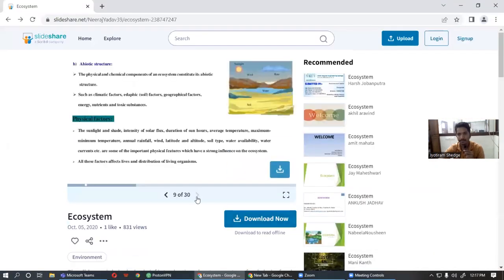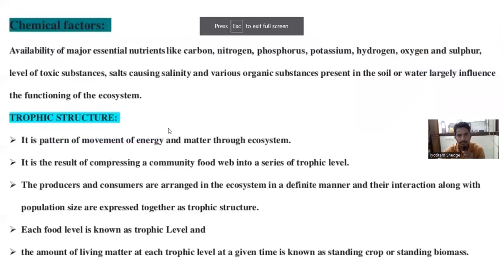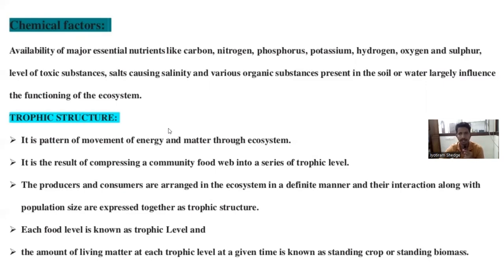Now, what is the meaning of chemical factors? There are various essential nutrients like carbon, nitrogen, phosphorus, potassium, hydrogen, oxygen, and sulfur — there are 16 important nutrients important for plants. These nutrients are important for the purpose of plant growth, and their presence in soil or water influences the function of the ecosystem.